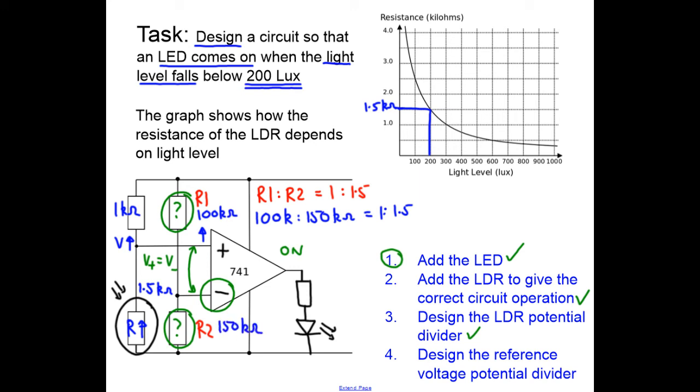And now I have completed my design exercise. The two parts which are difficult are putting the LDR in the correct place, and then realizing that the other potential divider has to give you the same voltage at the point where you want it to switch—it has to be the same ratio. And that's how you do those sort of questions.